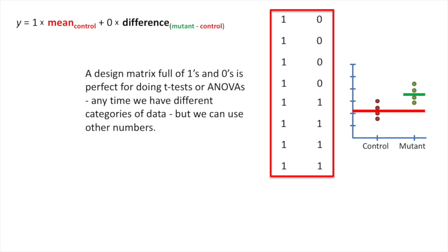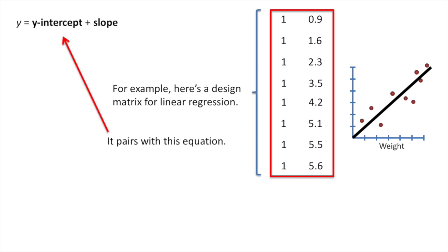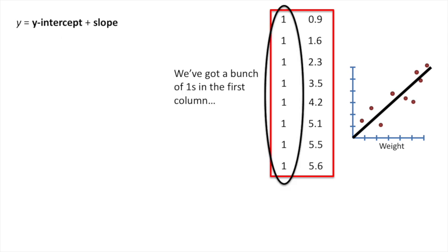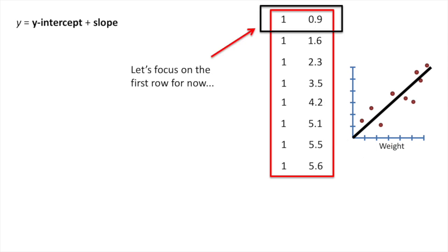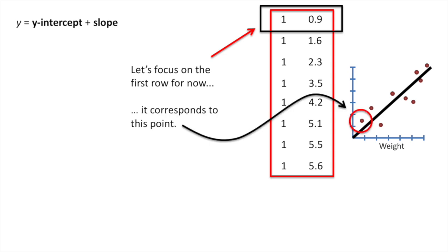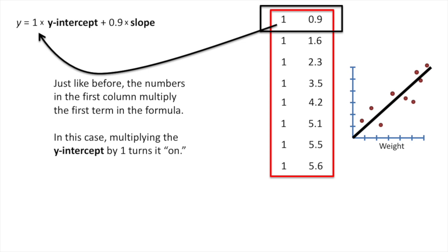For example, here's a design matrix for linear regression, which pairs with a corresponding equation. We've got a column of ones in the first column, and in the second column, we have the x-axis position for each data point. Let's focus on the first row — it corresponds to one specific point. Just like before, the numbers in the first column multiply the first term in the formula, which in this case is the y-intercept. Multiplying the y-intercept by 1 turns it on.